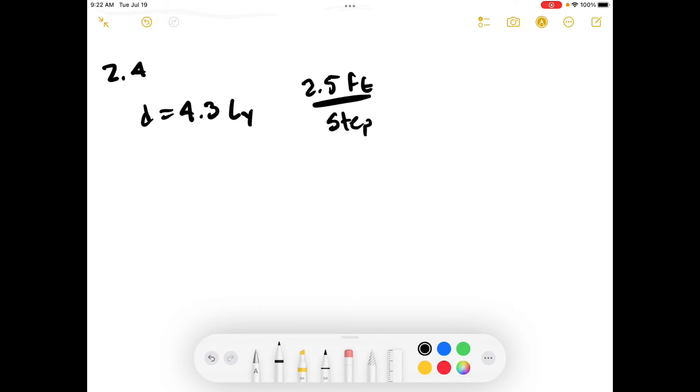We want to estimate how many steps it would take, so we just need to divide the distance we need to travel by the number of feet per step. So, 4.3 light years - how many feet are in a light year?